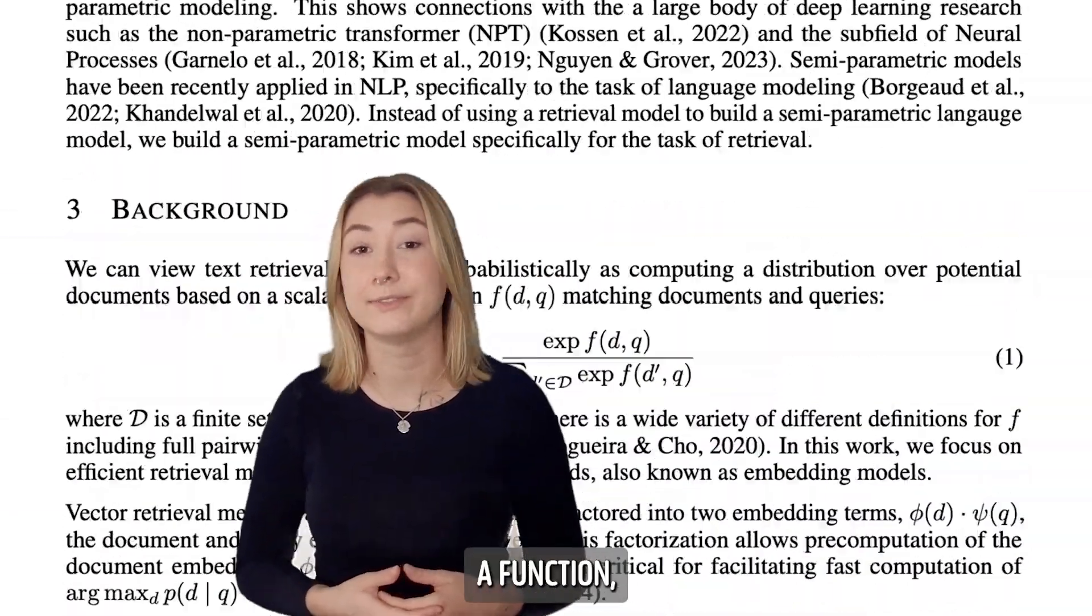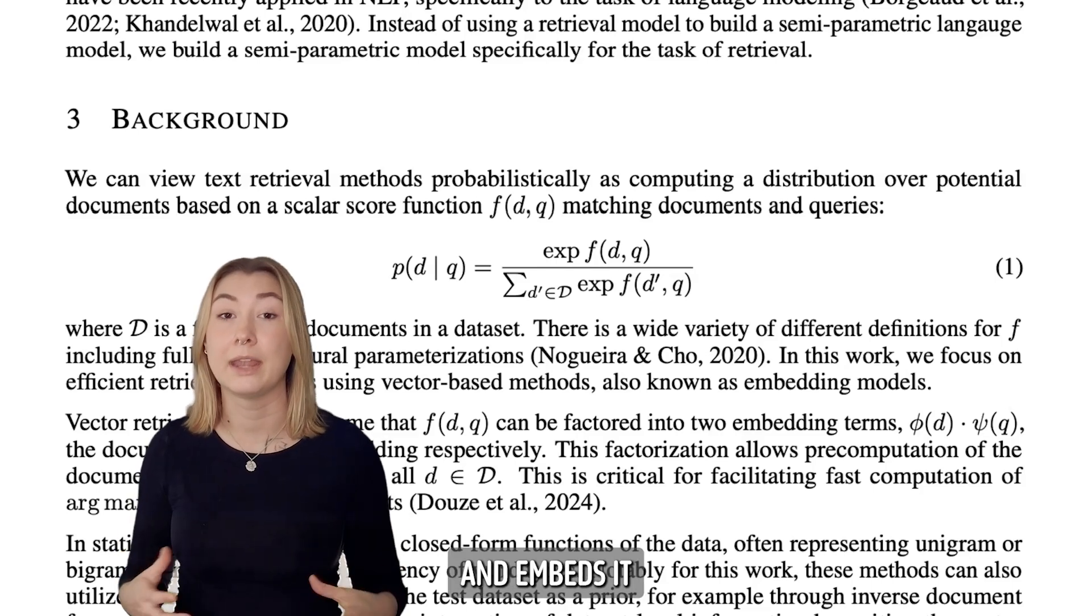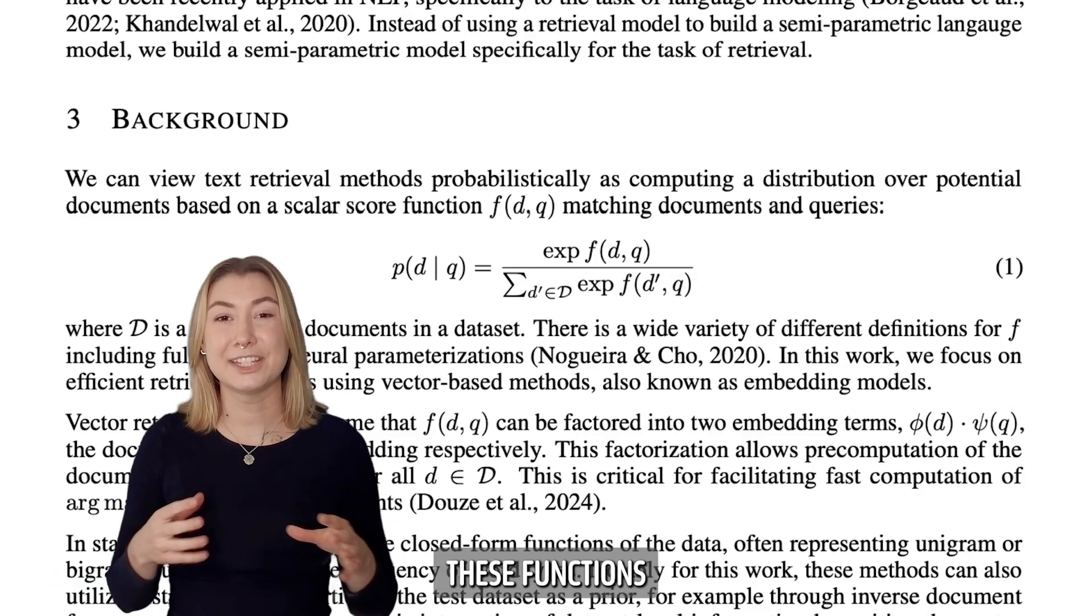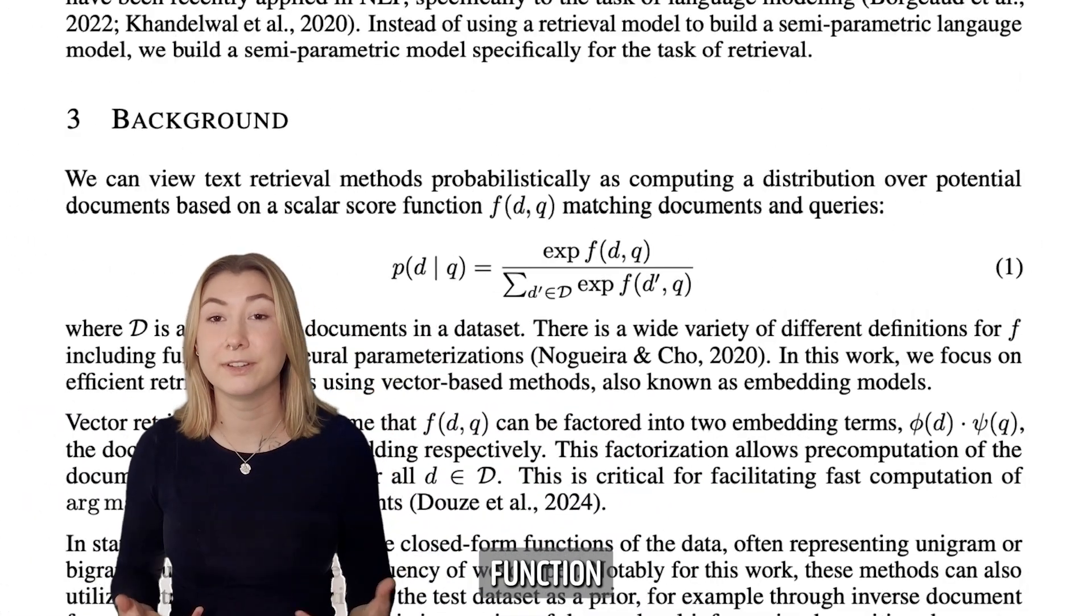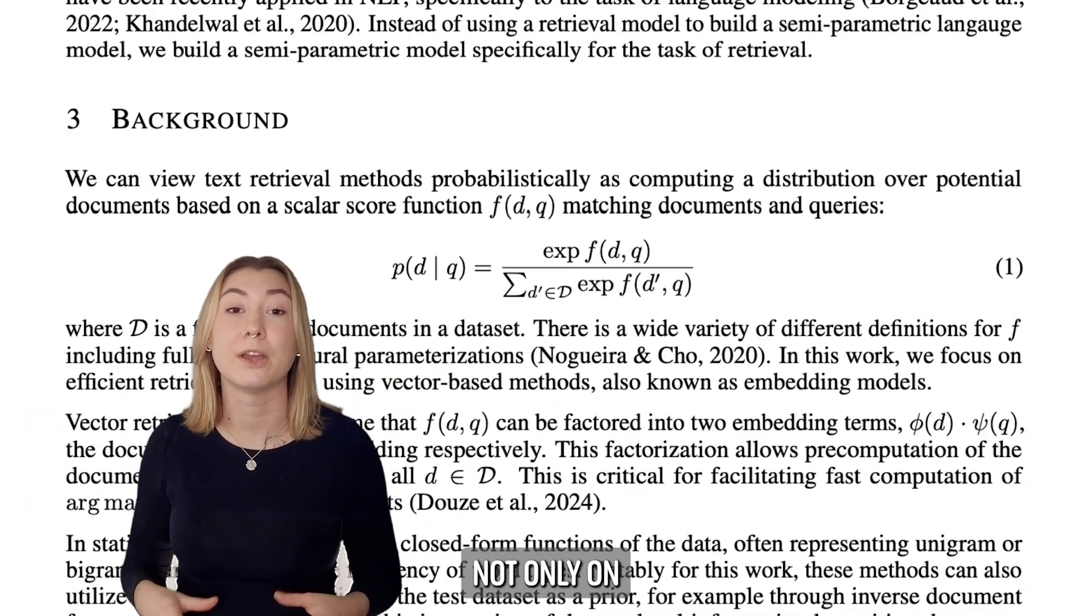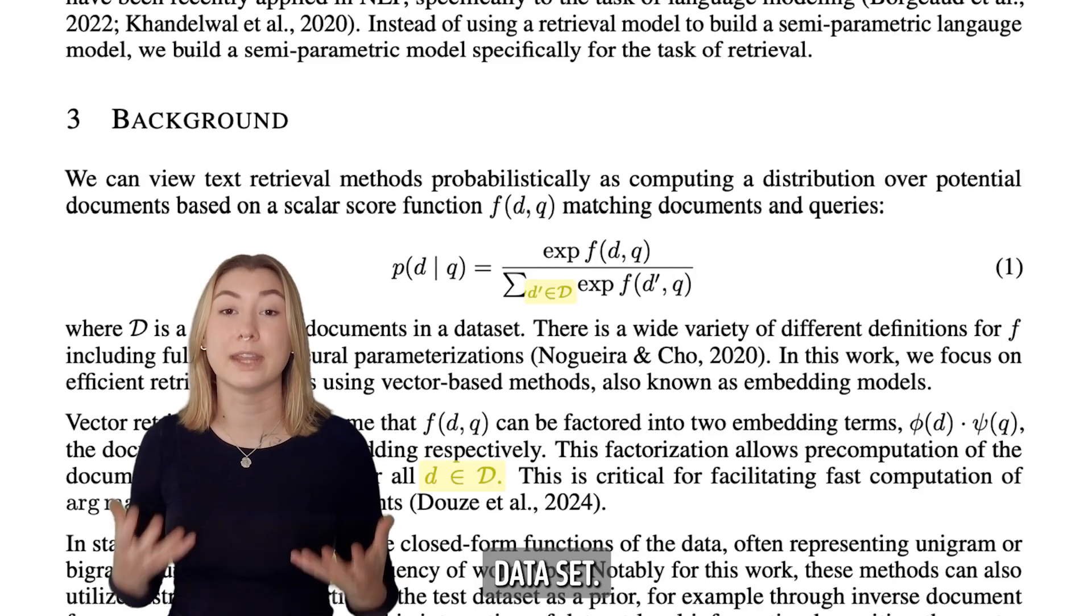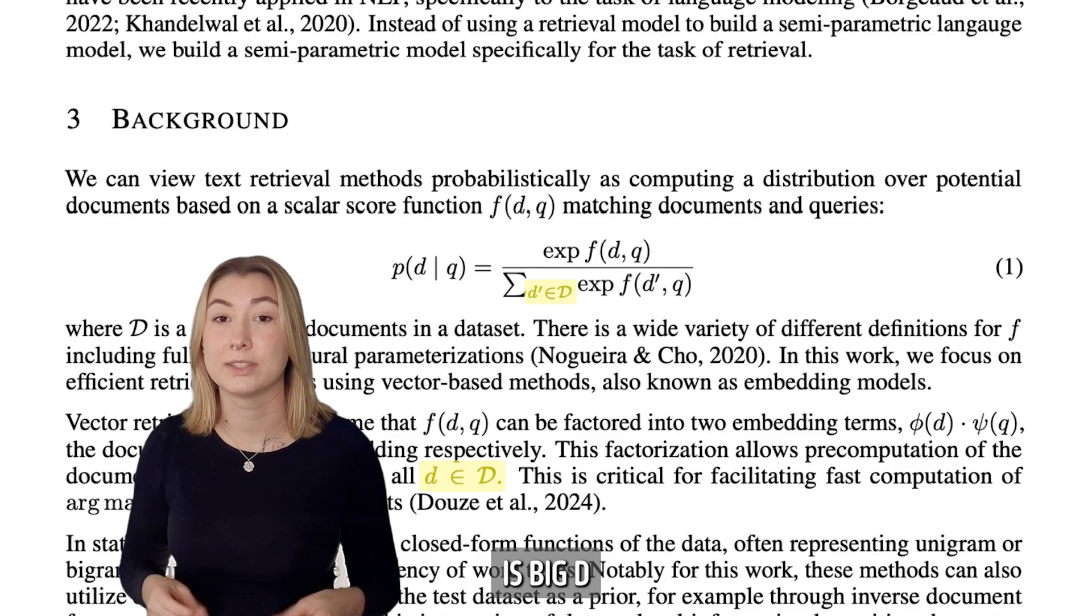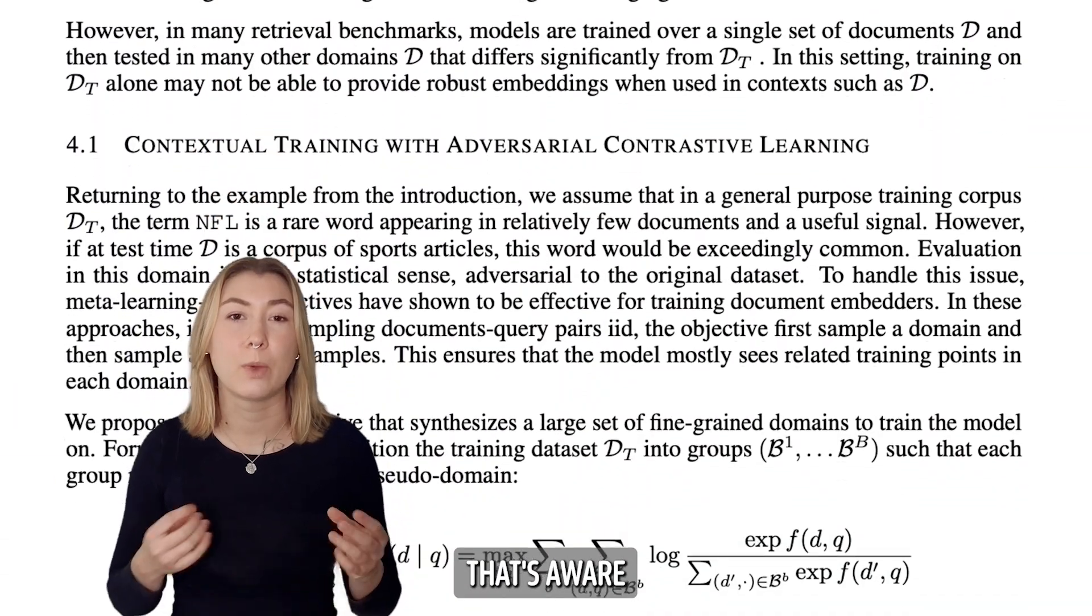A normal vector embedding is a function, normally a deep neural network, that takes a single document or query and embeds it into a vector space. These functions are represented in this paper by Phi and Psi. In this paper, they propose to let the embedding function for the documents in query depend not only on the query or document, but also all the other documents in the dataset. The full dataset of documents is big D in this equation. But how exactly do you create an embedding function that's aware of its surroundings?